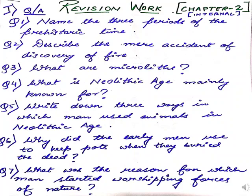Your fourth question is: what is the Neolithic Age mainly known for? This part you will find on page number 8 where the Neolithic Age is given. In the very first paragraph of that part, you will find that this age is better known for the discovery of agriculture, making of fine pottery, and invention of the wheel.